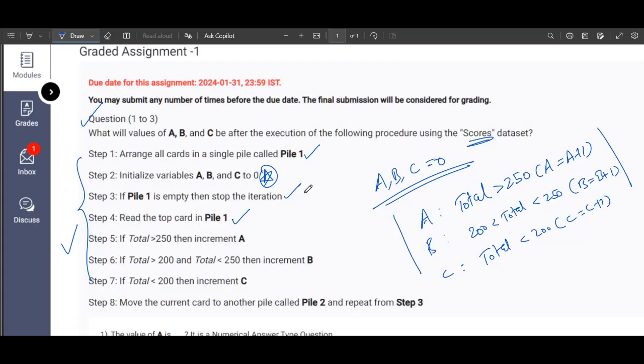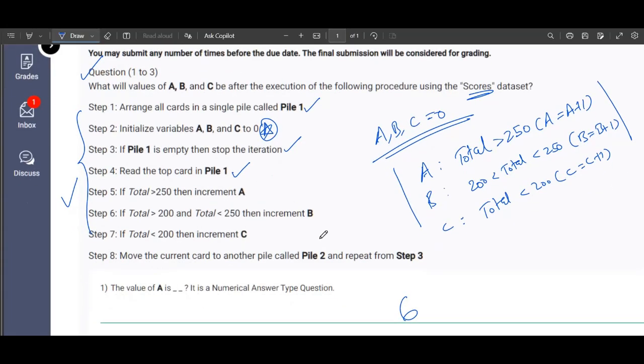These are the separate cases under which we'll have to build the values of A, B, and C together. In order to solve this question we'll have to use the scores dataset which has been done internally by the team. Hereafter we'll be providing the answer directly which you can submit.